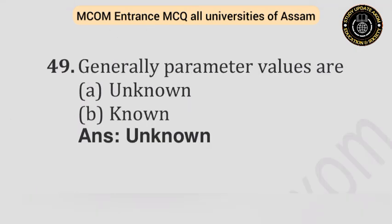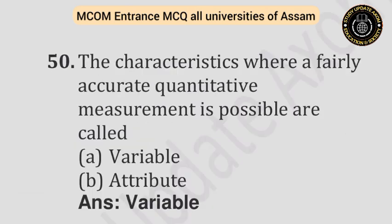Question number forty-nine: Generally, parameter values are — Option A: Unknown. Option B: Known. Answer is unknown. Question number fifty: The characteristics where a fairly accurate quantitative measurement is possible are called — Option A: Variable. Option B: Attribute. Answer is variable.